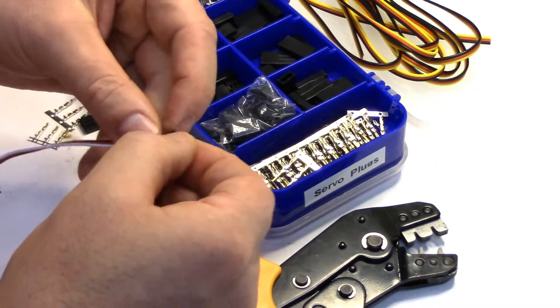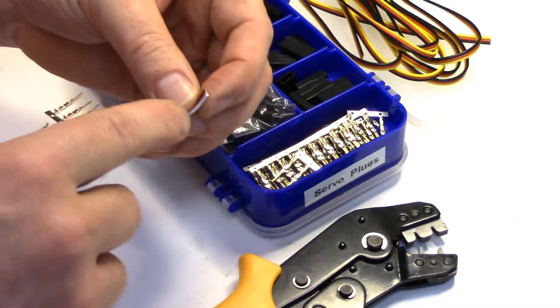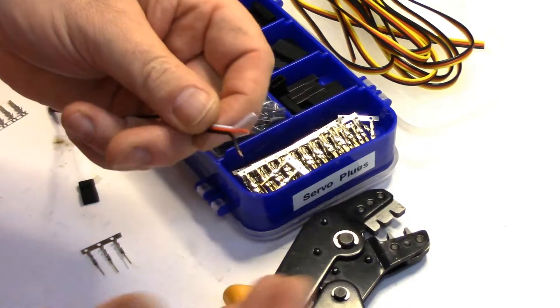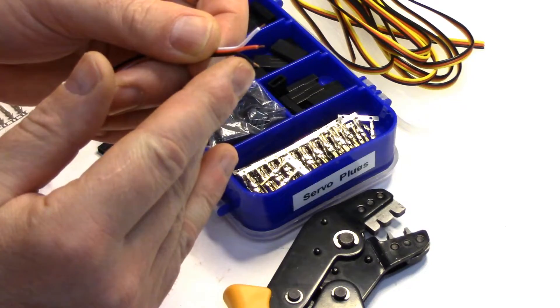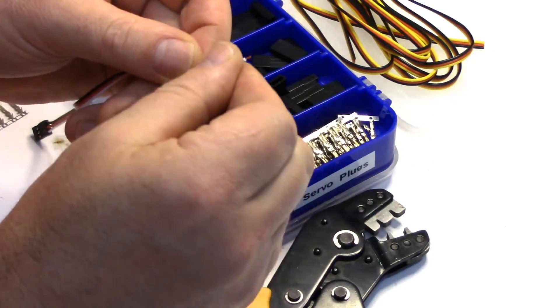Now we'll do the female end. I'll just pause it while I get the wires stripped and pulled apart. Okay. So just like the female end, just strip them about three millimeters of wire exposed.